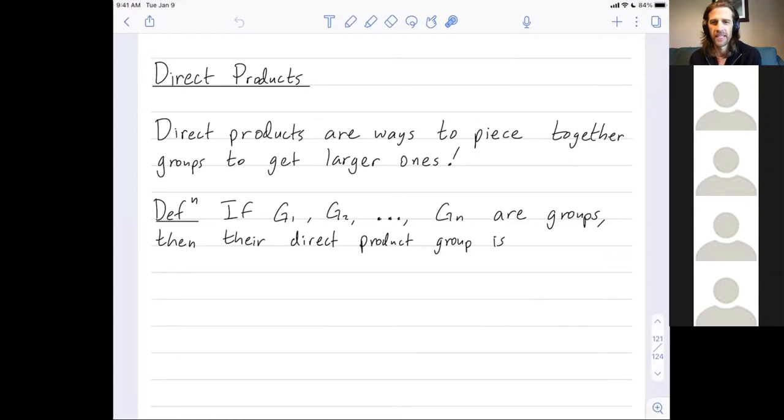Direct products are ways to piece together groups to get larger ones. An important perspective is that direct products are also ways to understand larger groups. If you have a large complicated group, you can ask, does it break up into simpler pieces via direct products?